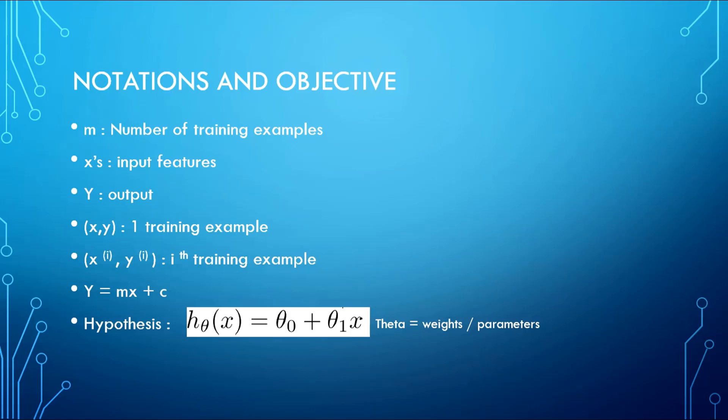Theta_1 is basically the slope of our linear function or hypothesis, and H_theta(X) is the output. Similarly, theta_0 is the Y-intercept. Theta is also sometimes named as weights or the parameters of our model.